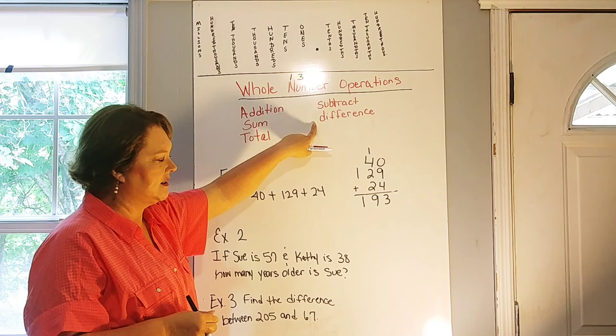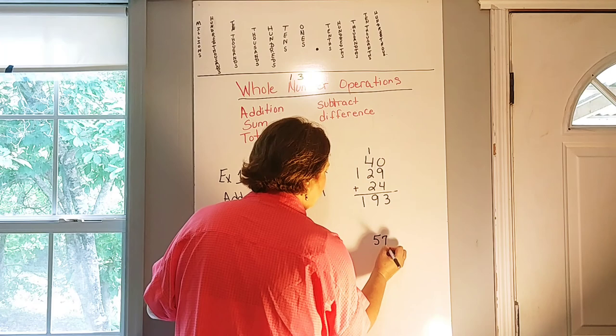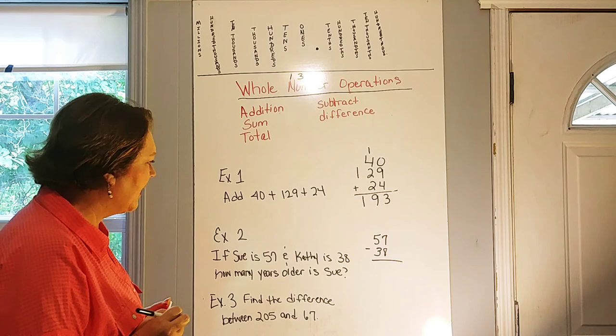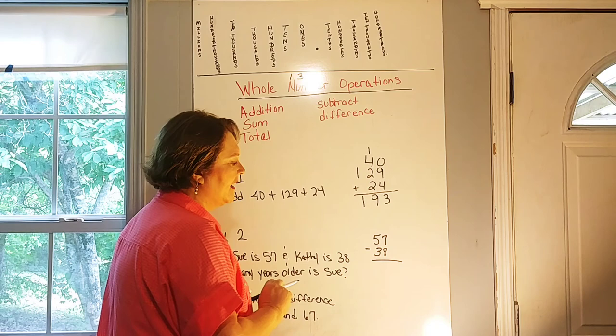Okay, so let's start with our greatest number first, and that is 57. And we're going to subtract or take away 38. 57 is Sue's age, 38 is Kathy's age. So if we start to subtract here, again, we always start with our ones place when we're doing whole numbers. And we cannot take eight from seven.